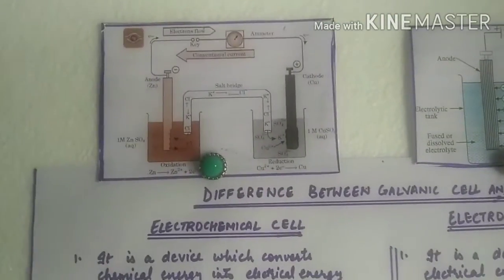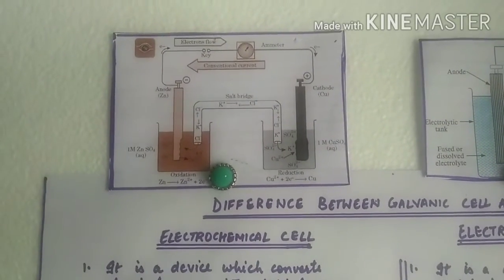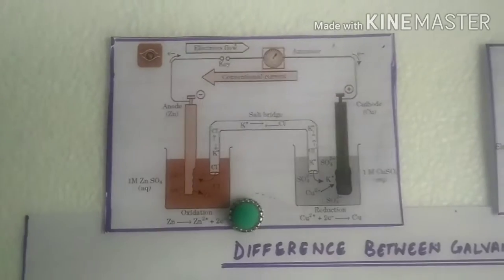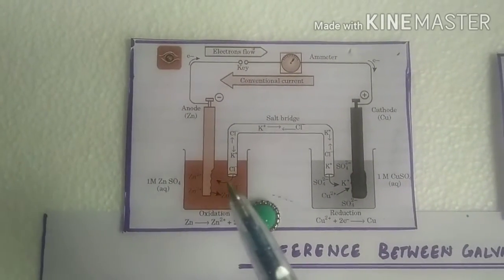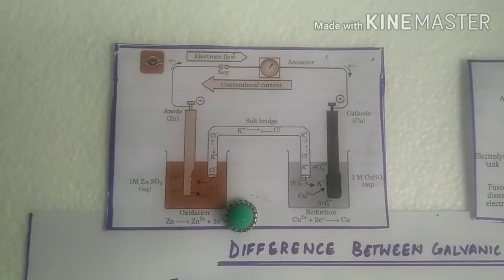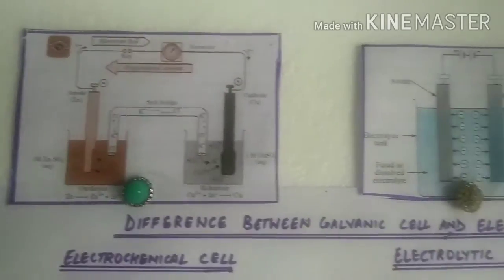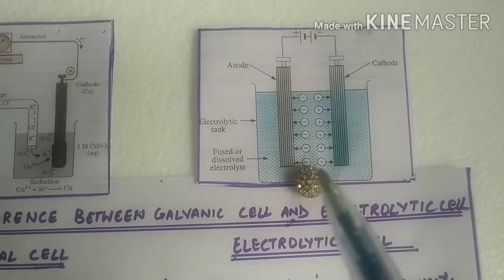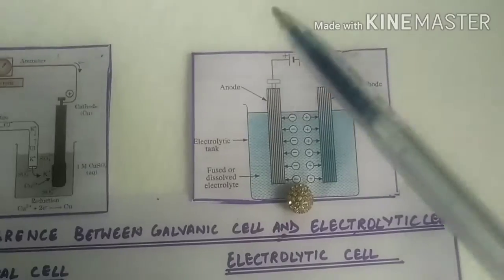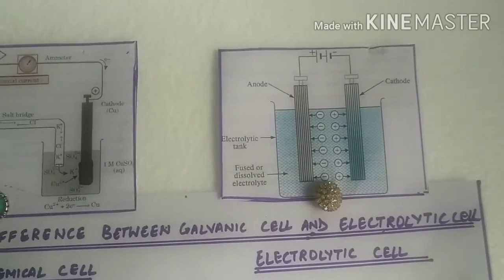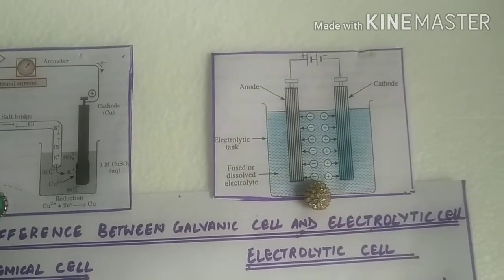So this is the picture of a galvanic cell or electrochemical cell in which the spontaneous reaction results in production of electrical energy. And this is the picture of an electrolytic cell where non-spontaneous reaction is made to occur by passing electric current through it. So electrical energy is converted to chemical energy.